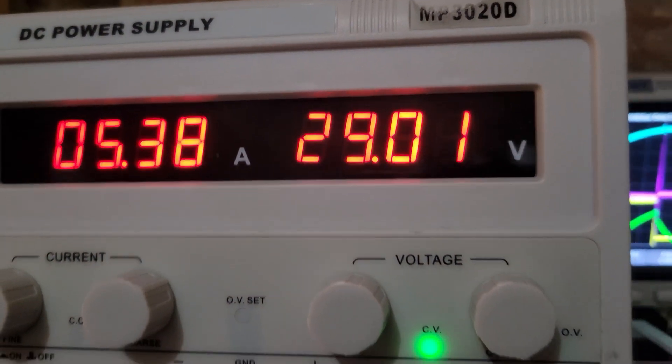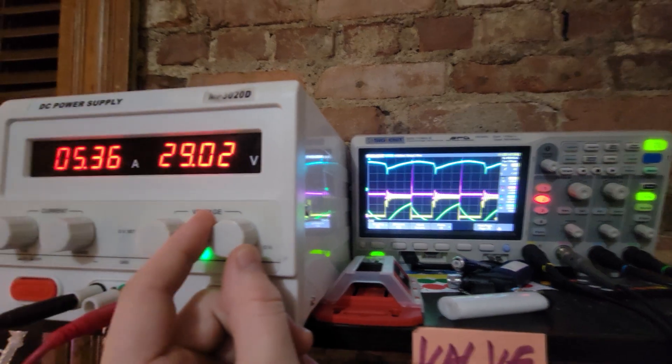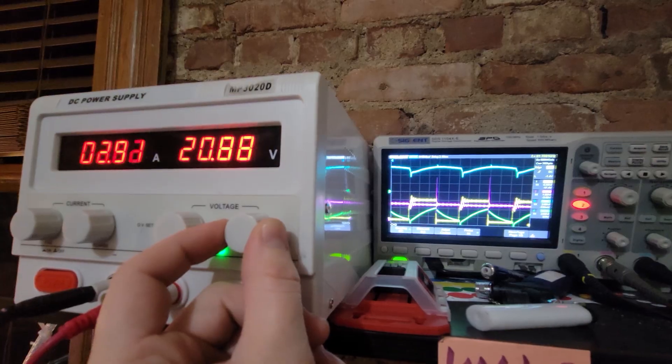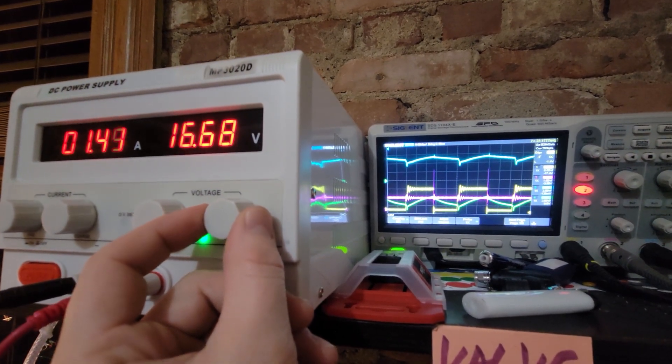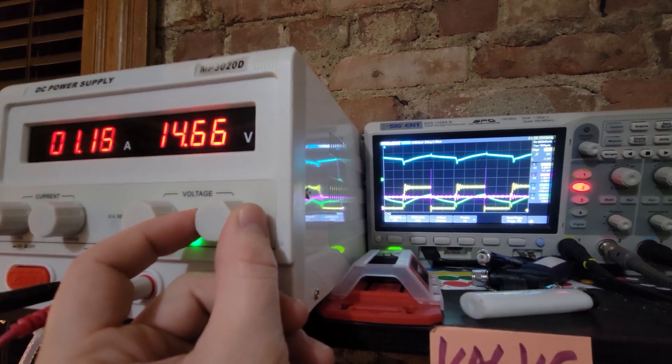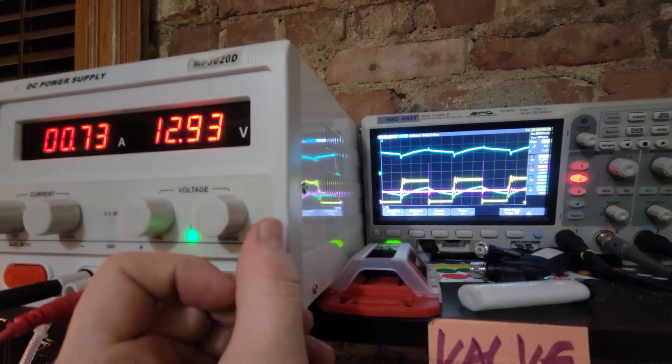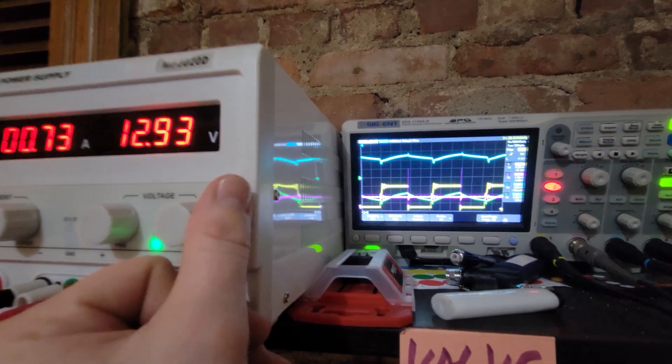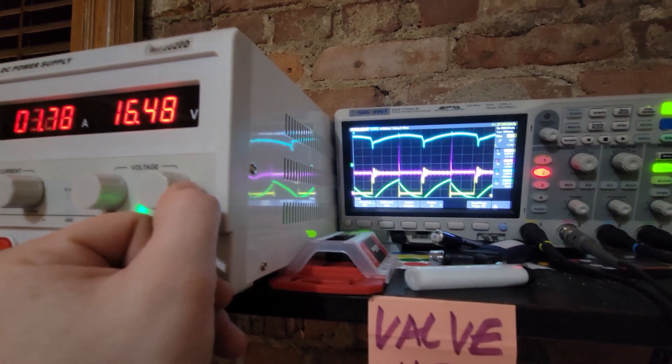120 volts across the cell. 110 volts across the cell. 100 volts down to 50 milliamps across the cell at 100 volts.